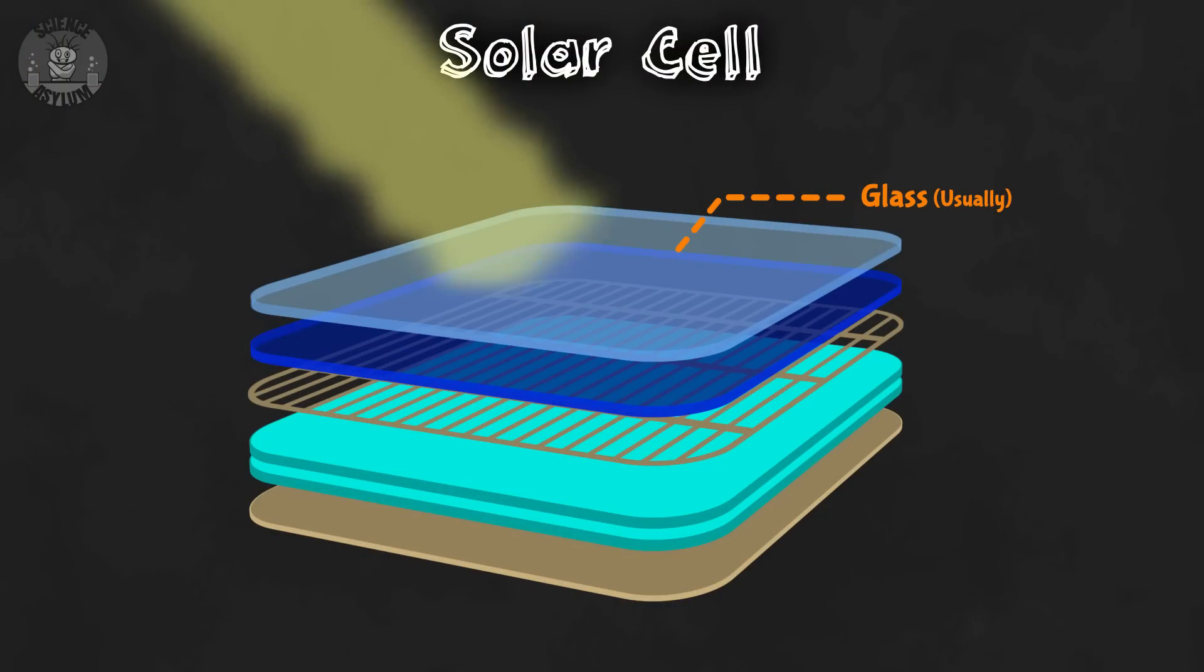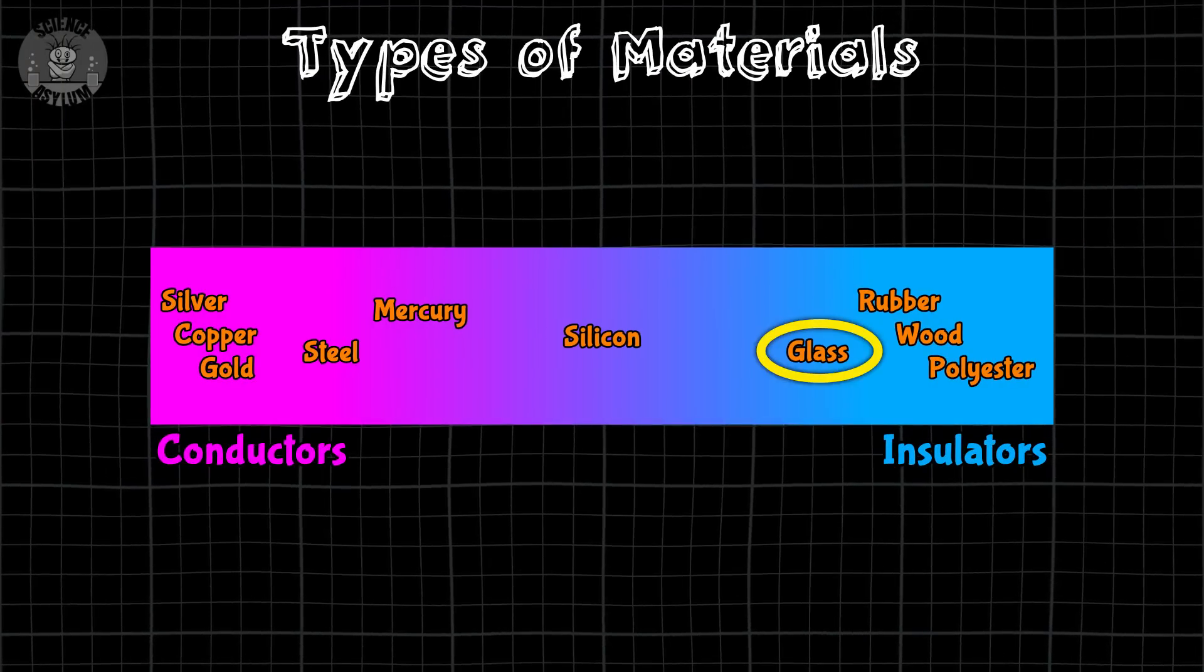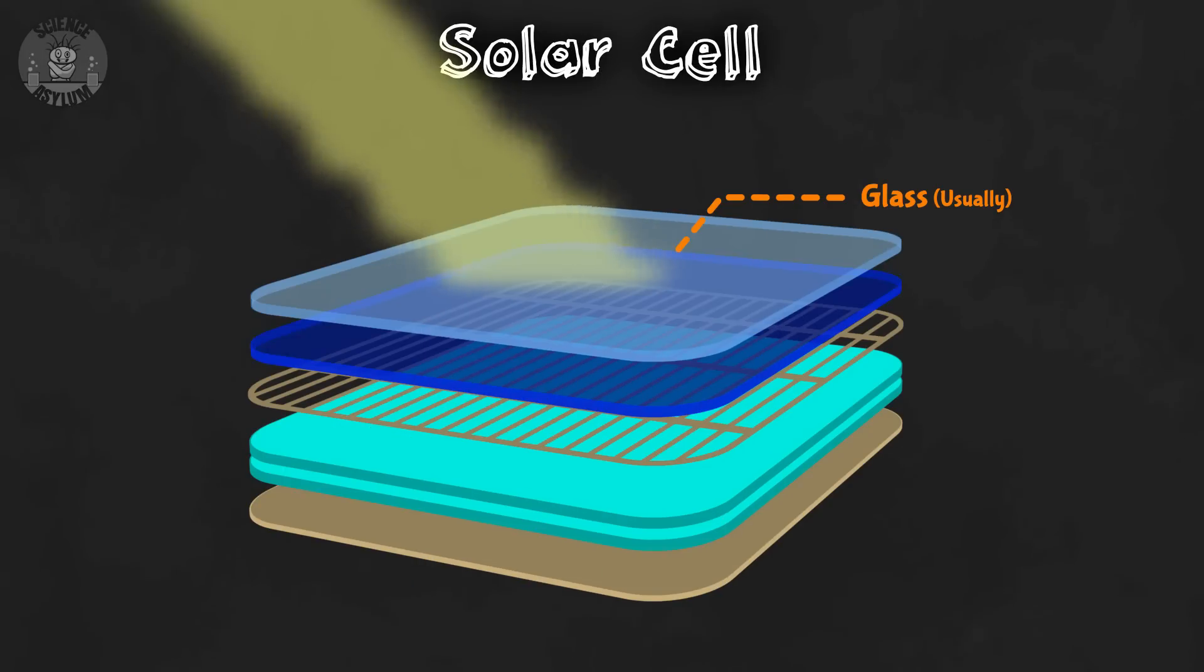The first layer the light encounters is glass. Glass is an insulator, so it's not going to conduct any noticeable electricity. It's also transparent, so most of the light just passes through. The reason it's there is to keep everything else out. The other layers are kind of fragile, so the glass protects them.